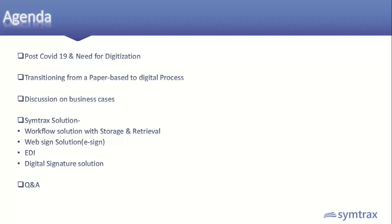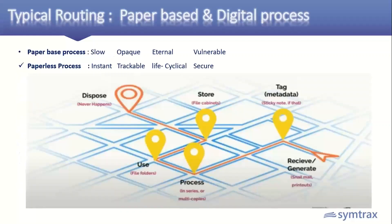Let's discuss the typical routing of paper-based versus digital processes. In a paper-based process, assume you are receiving invoices from a vendor — you receive a hard copy, use sticky notes for reminders, send to respective authority for approval requiring multiple printouts, store in file cabinets, merge the purchase order manually for payment clearance, and store everything in file folders. This is a slow, opaque, and entirely manual process.